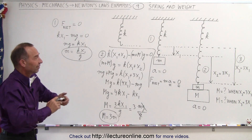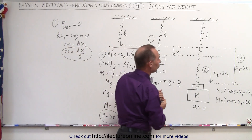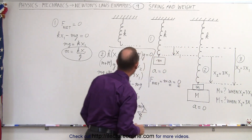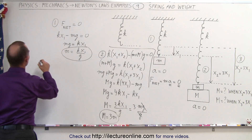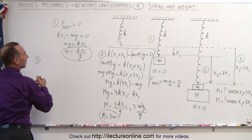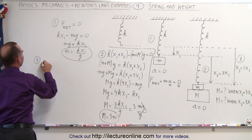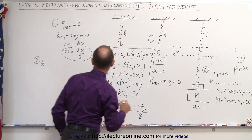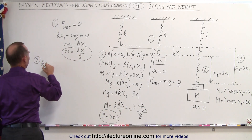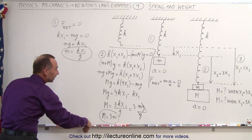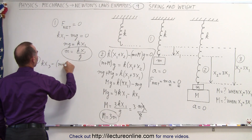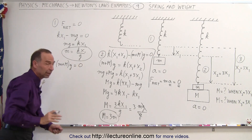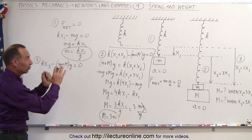Now let's attack our third situation. Let's say it was worded such that the total distance x3 is equal to 3 times the initial distance x1. We attack it the very same way. For number 3, the force pulling up is k times the total distance x3, minus the force pulling down — the sum of the two masses times g — and that is equal to zero because there's no acceleration, and therefore no net force.